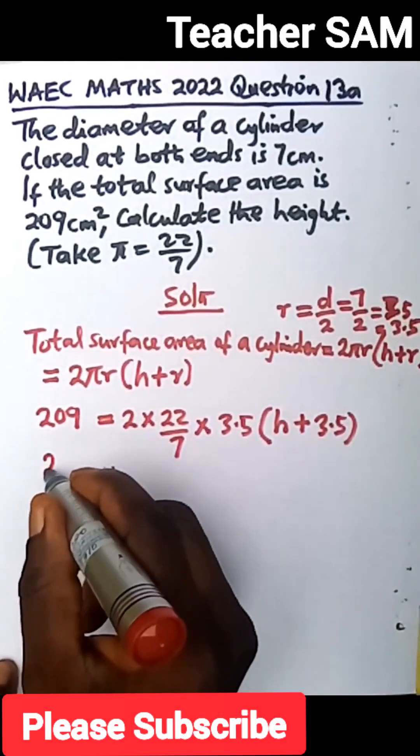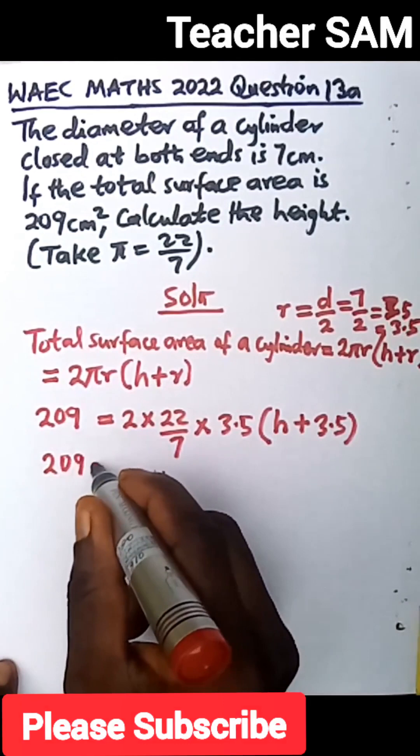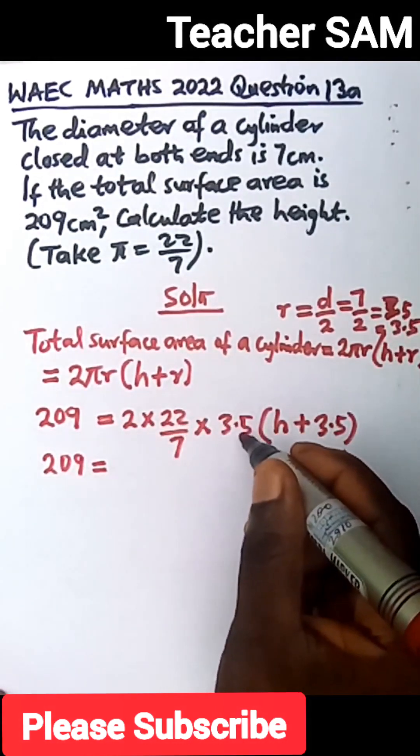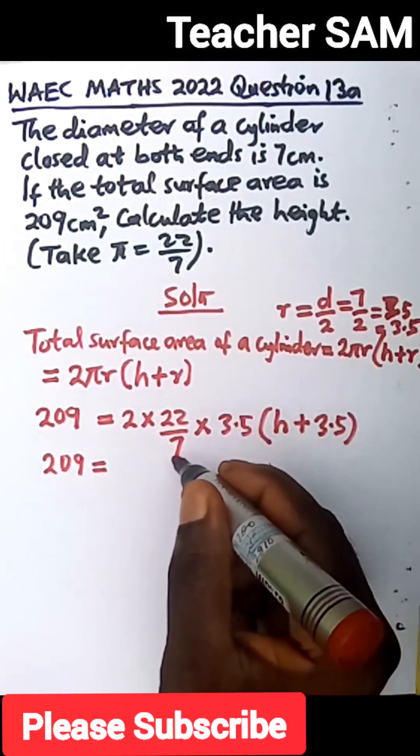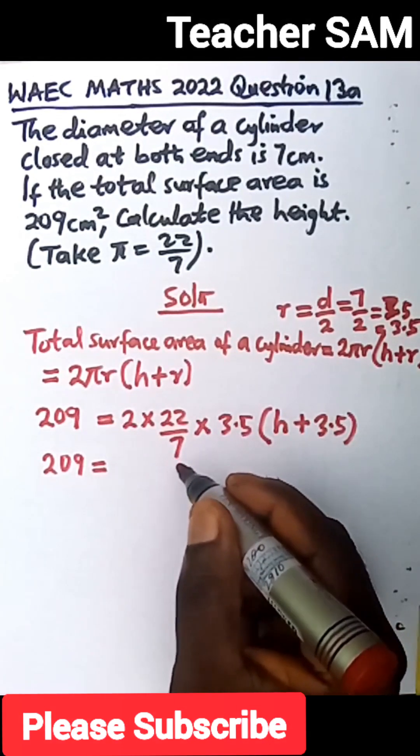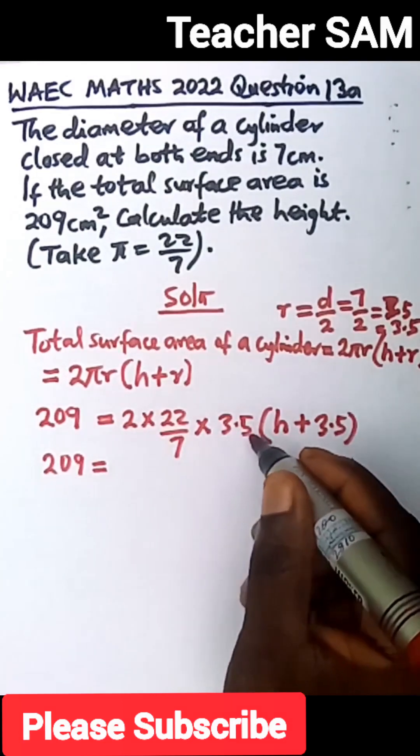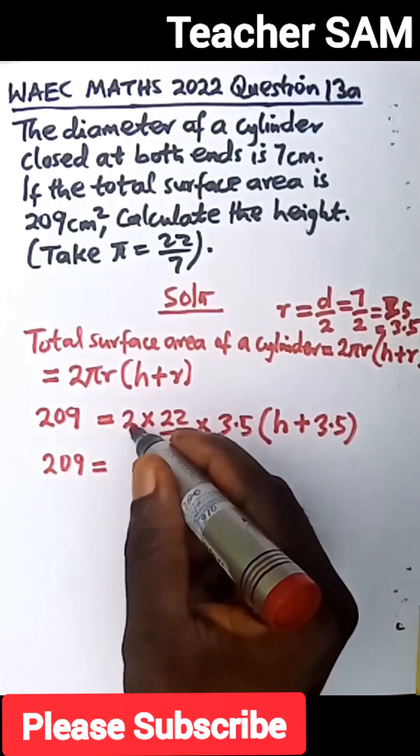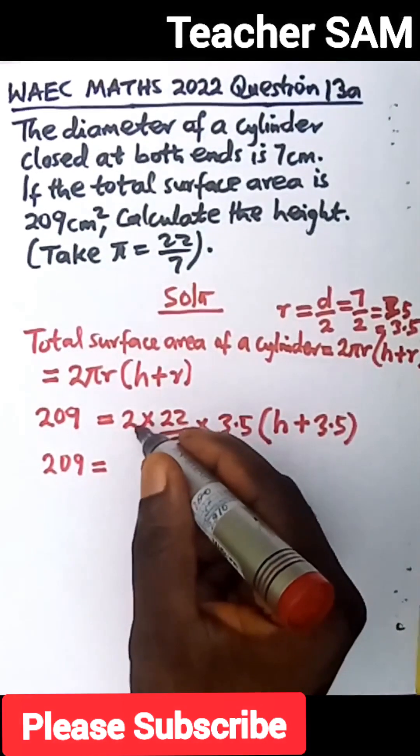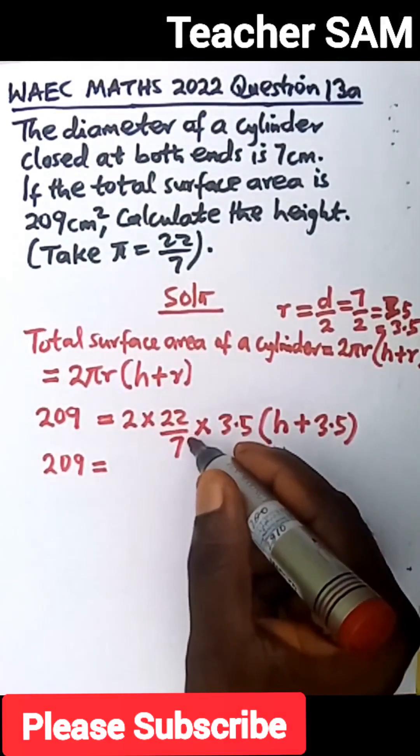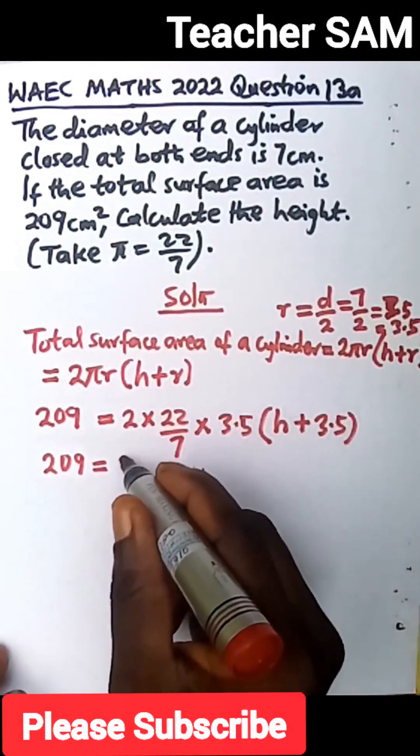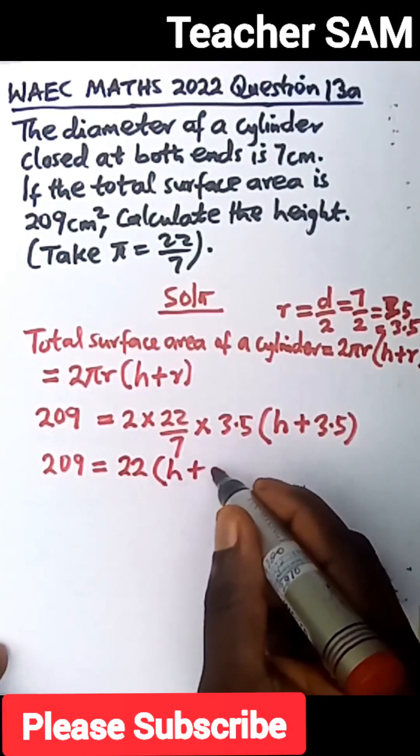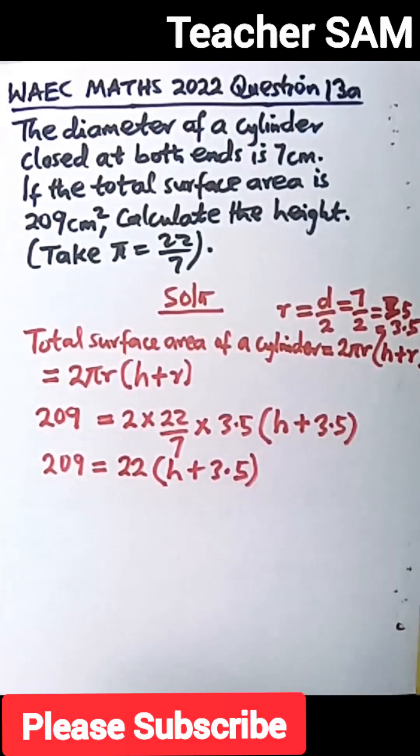We go ahead. 209 equals 2 times 22 times 3.5 divided by 7. Or better still, 2 times 3.5 gives us 7. And 7 will divide 7. We are left with 22. So we have 22 into our height plus 3.5.